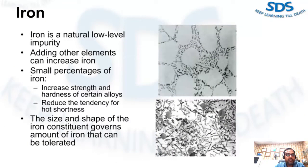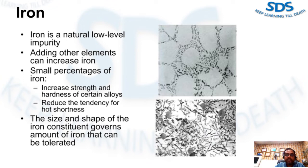Iron is a natural low-level impurity in aluminum and its alloys due to its association with elements in the bauxite ore and the solvent action of aluminum on melting tools and accessories it contacts. The addition of other elements, particularly silicon, tends to increase the iron content. Iron is present in the form of complex constituents in combination with aluminum and silicon, and under some conditions also in combination with chromium, magnesium, or copper. Although considered an impurity in alloys for other casting processes, iron performs a useful function in die casting alloys.